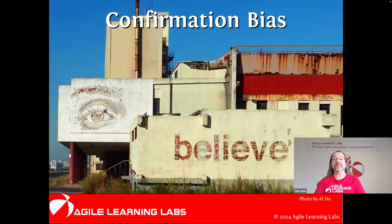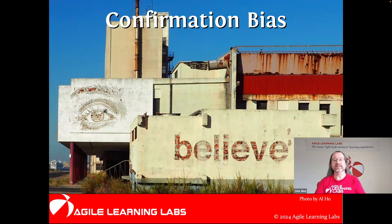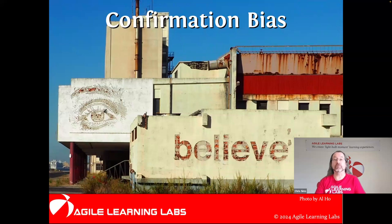Confirmation bias is a tendency to search for, interpret, and favor data that supports your pre-existing position, and to not pay as much attention to data that is contrary to your existing position. We also have a tendency to interpret ambiguous data as supporting our position. Scrum product owners tend to have deeply held beliefs about their market, their stakeholders, their product, and how the features should work. Confirmation bias is very likely to lead a product owner to disregard or undervalue information, data, and evidence suggesting their current understanding isn't entirely accurate and that they may need to inspect and adapt their plans for the product.